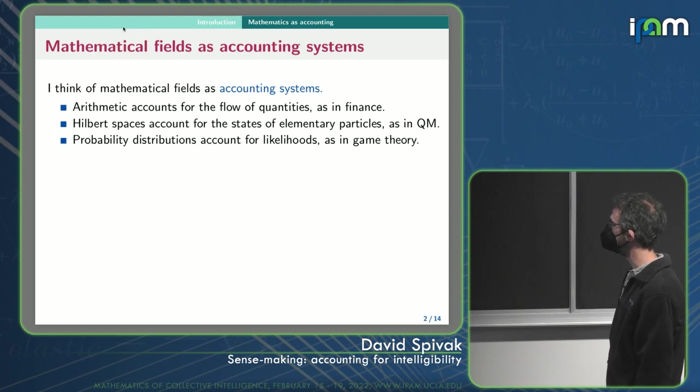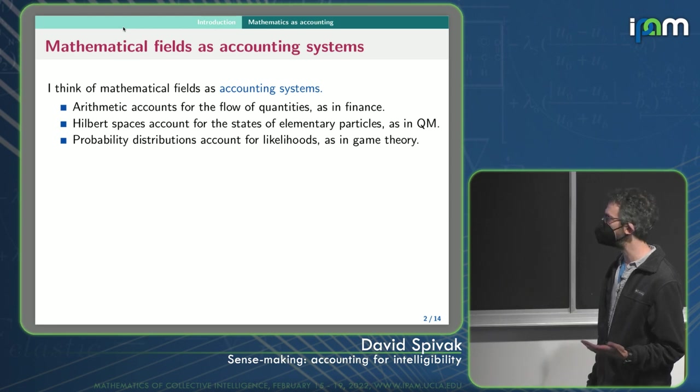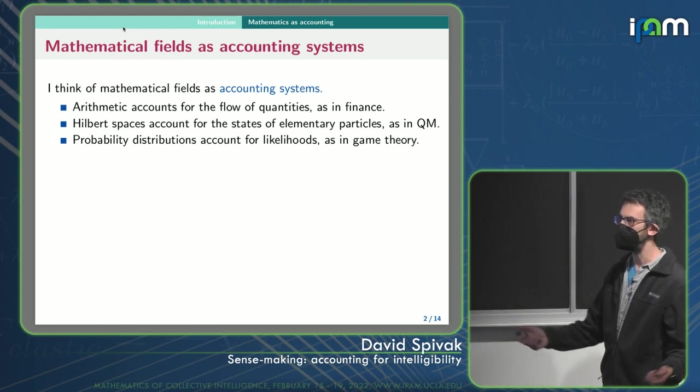So arithmetic is what an accountant would use to account for, to be able to help you point to the flows of quantities, like in finance. Or Hilbert spaces are the accounting system that you would use if you wanted to say what the states of elementary particles are in quantum mechanics. You'd say, here's my account. I have this Hilbert space, and I have this transformation, and stuff like that.